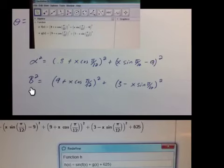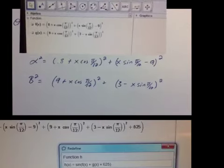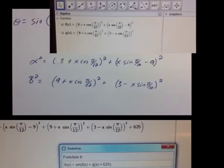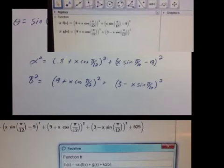And then beta squared is defined as g of x. And let me make this a little bit bigger so you can see that I've gone ahead and defined these within the graph, within the sketch.